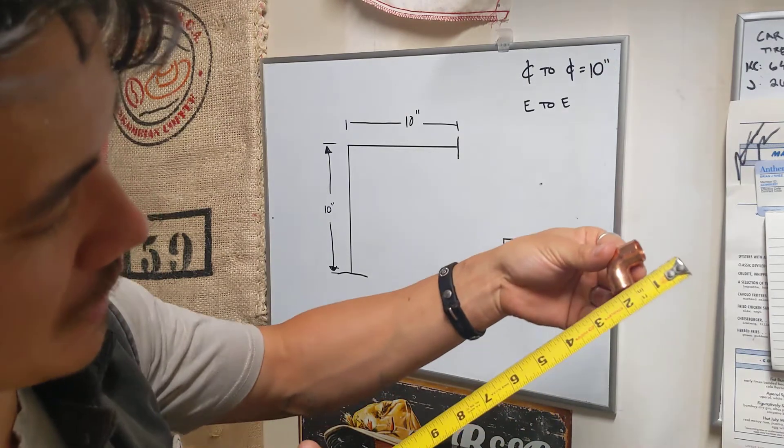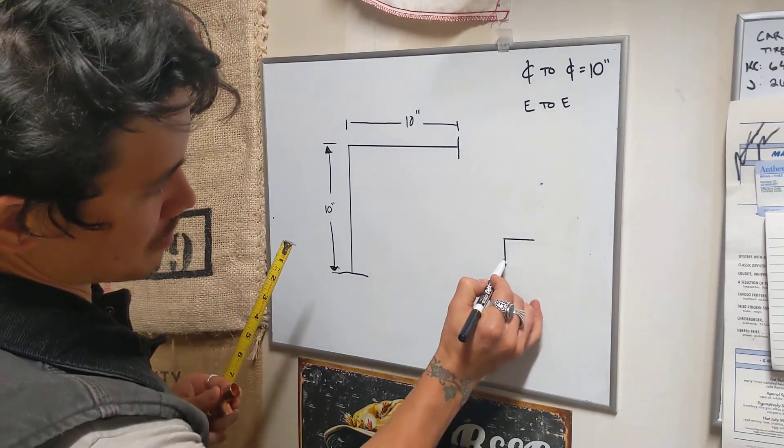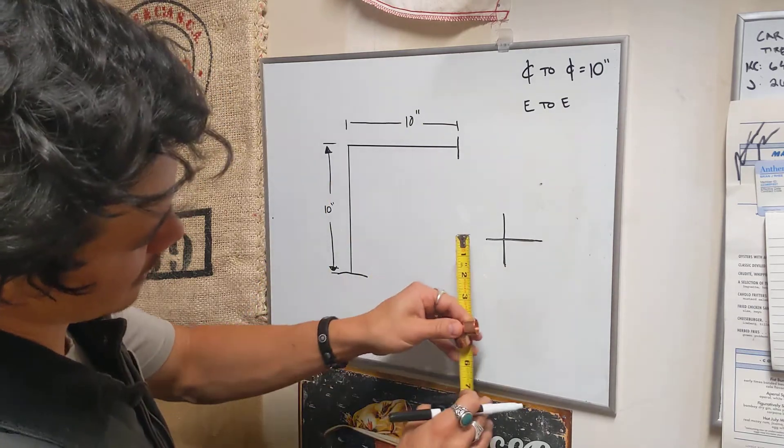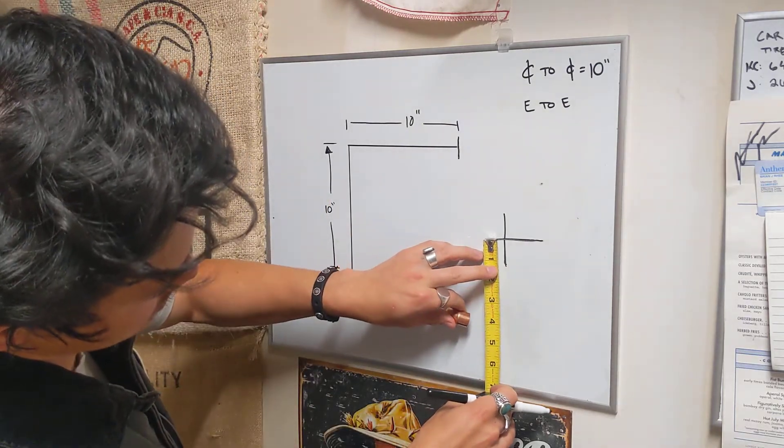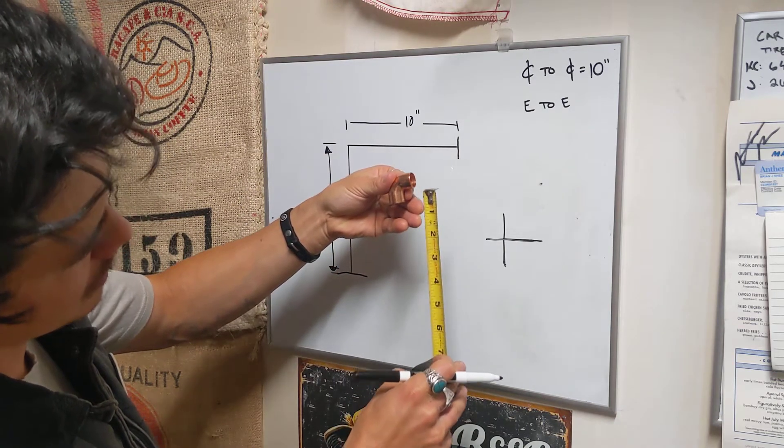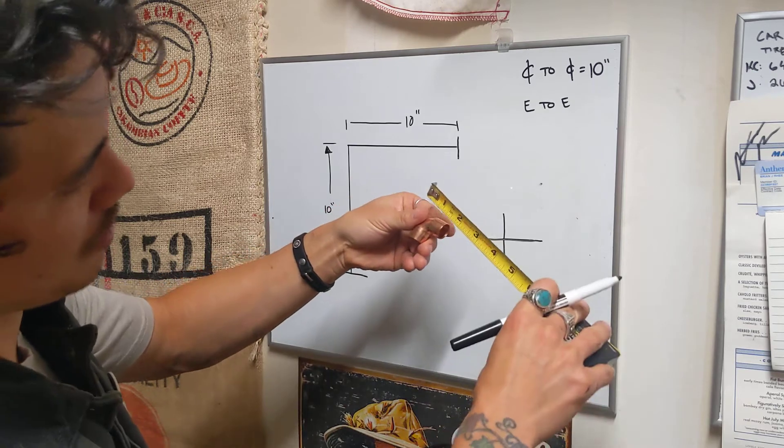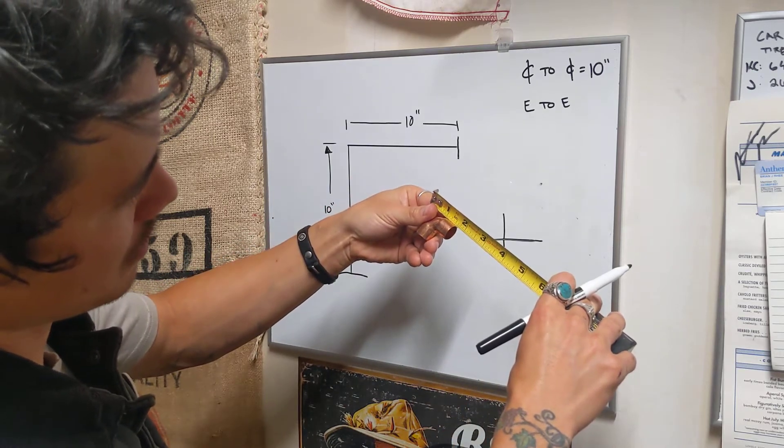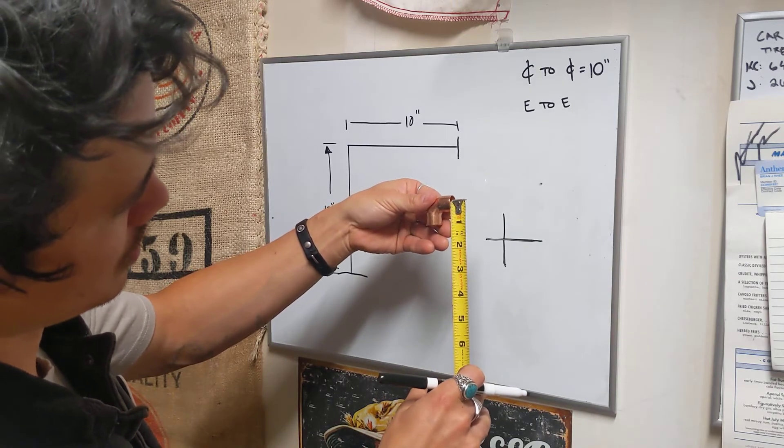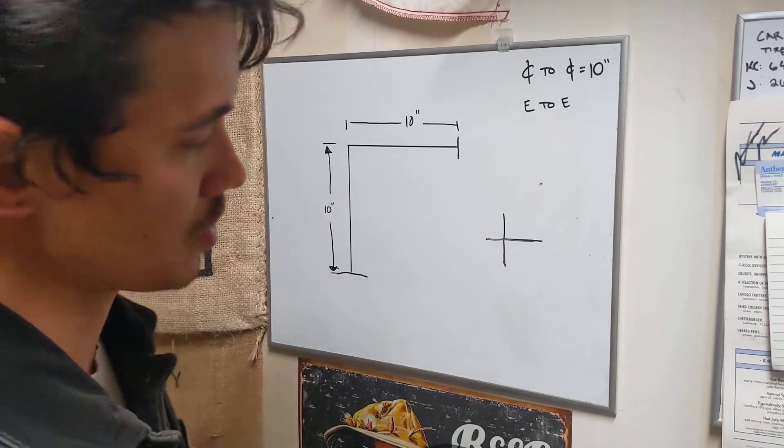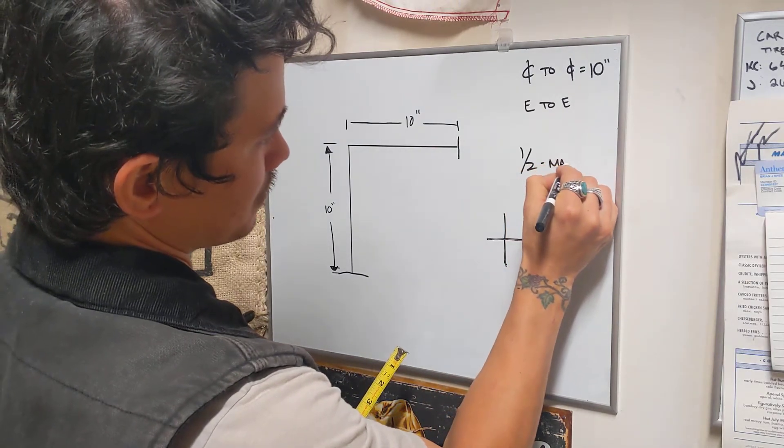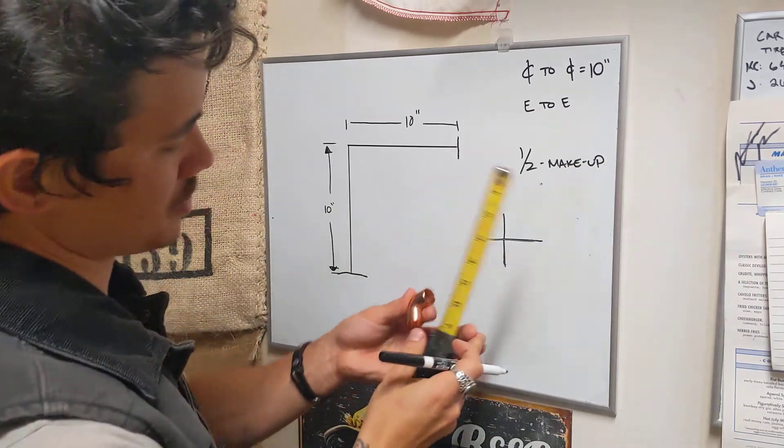So we're measuring from this line of the fitting, center line here to center line here. So what we're looking at is if you go from here to here you're looking at about an inch. Now you have to take off your makeup though and if your makeup let's call it half an inch, that leaves you half an inch. So half an inch of makeup is that fitting that your pipe goes into.